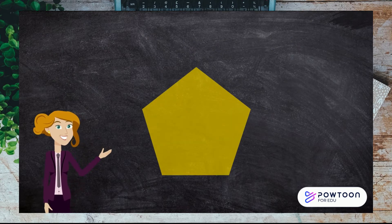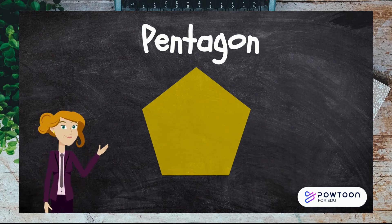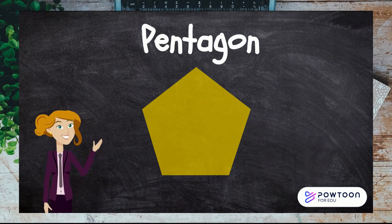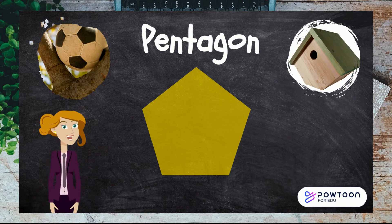This shape has five sides. It's called a pentagon. You can find pentagons on soccer balls. Where else could you find a pentagon?